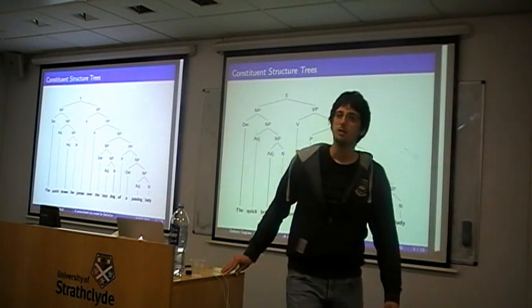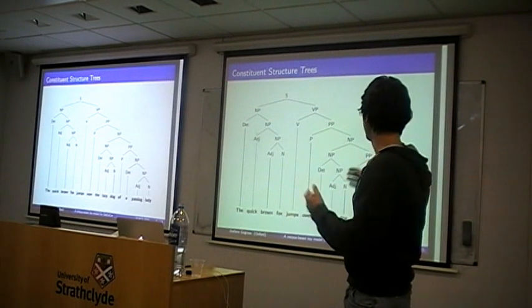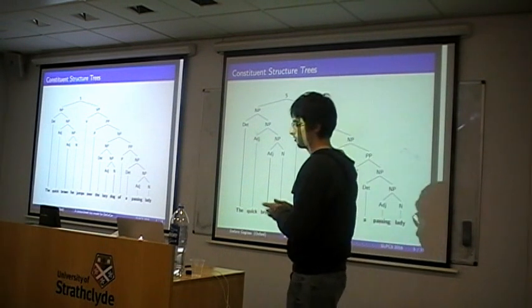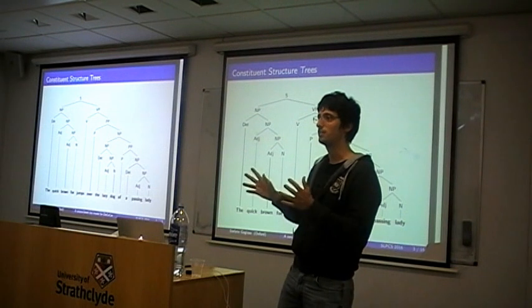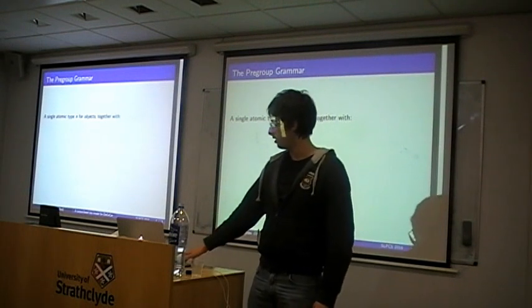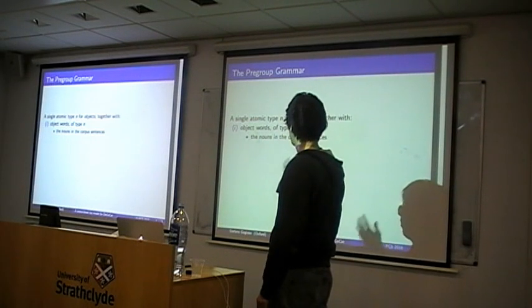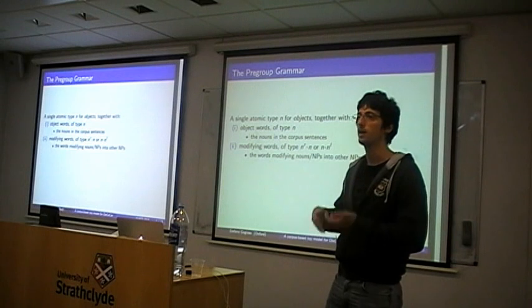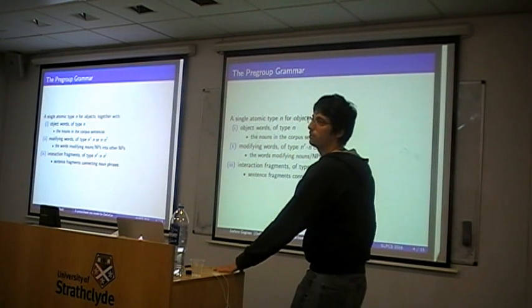Here's a picture of a constituent structure tree with the example sentence I want to build a vector for in the end: 'the quick brown fox jumps over the lazy dog of a passing lady.' There are three objects intuitively — a lady, a fox, and a dog — they have some modifiers attached to them, and there's some interaction between them. I take a single common type for objects, nouns will be the object words of that type, modifiers will be morphisms from that type to that type — like adjectives or determiners — and interaction fragments connect them.